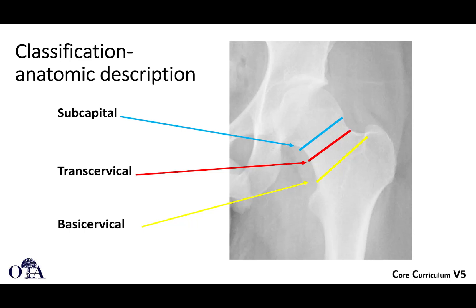Anatomically, if asked what kind of femoral neck fracture you have, most people will understand if you tell them where it is: is it subcapital, transcervical, or basicervical, as shown in this image? That's important to help guide treatment. Basicervical fractures can frequently be treated with internal fixation even in elderly patients. It's the subcapital and transcervical fractures that we worry more about when it comes to osteonecrosis.